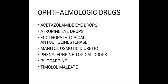Ecothiopate is a topical anticholinesterase drug used to maintain miosis in the treatment of glaucoma. Systemic absorption of ecothiopate leads to total body inhibition of plasma cholinesterase. Subsequent administration of succinylcholine can cause prolonged muscle paralysis. Inhibition of metabolism of ester-type local anesthetics may predispose the patient to local anesthetic toxicity. Ecothiopate is very long acting — return towards normal enzyme activity may take 4 to 6 weeks after discontinuation.